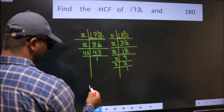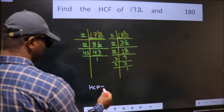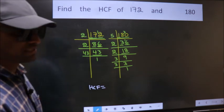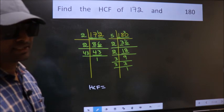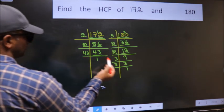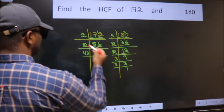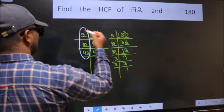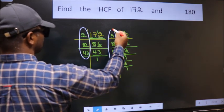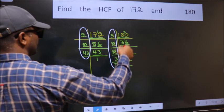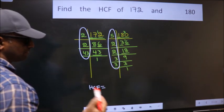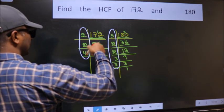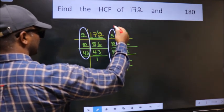Therefore, our HCF is the product of the numbers which should be present in these two places. That is here and also here. Here and here. So now let us find the numbers which should be present here and here.